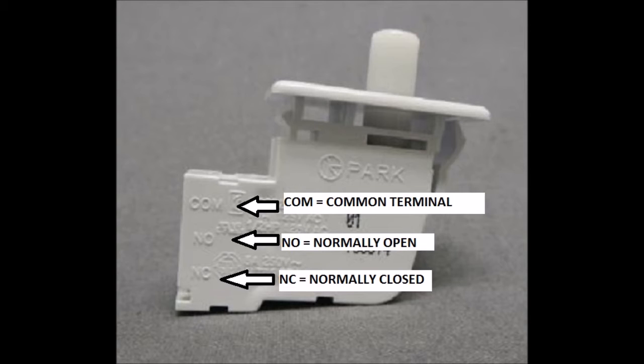The COM is where your main wire will hook up to, and then NO will normally be open or no continuity when the switch is open. NC will be normally closed when the switch is open like it is just sitting there when it's not hooked up.